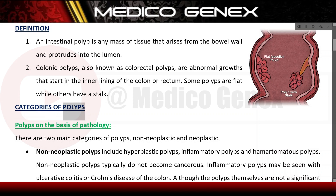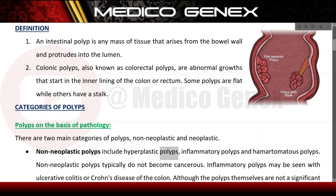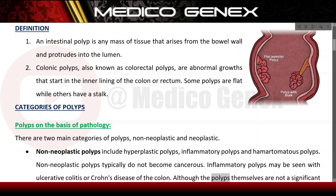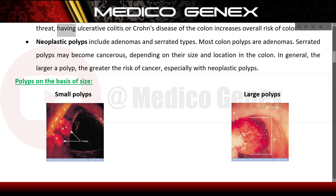Categories of polyps — on the basis of pathology, there are two main categories: non-neoplastic and neoplastic. Non-neoplastic polyps include hyperplastic polyps, inflammatory polyps, and hamartomatous polyps. Non-neoplastic polyps typically do not become cancerous. Inflammatory polyps may be seen with ulcerative colitis or Crohn's disease of the colon. Although the polyps themselves are not a significant threat, having ulcerative colitis or Crohn's disease increases overall risk of colon cancer.